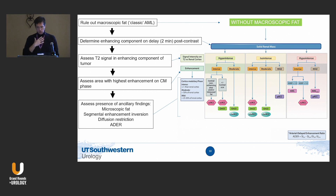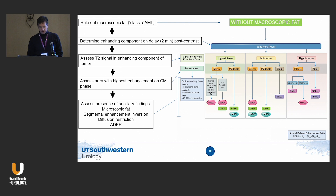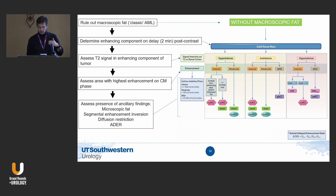I'm going to run through this quickly. Basically, you want to rule out fat, assess if it's enhancing on T1, and then proceed through the algorithm. On T2, you want to see if there's an enhancing component in the tumor. Every single tumor type would fall into one of these pathways.